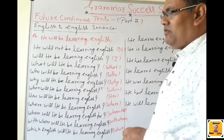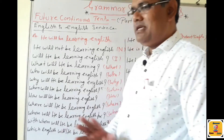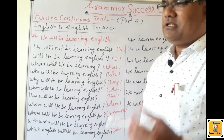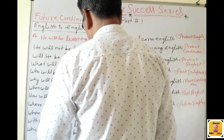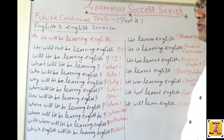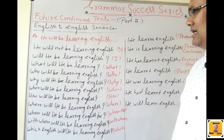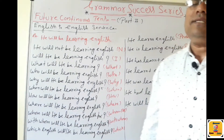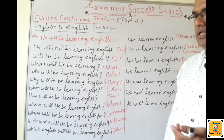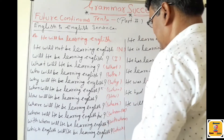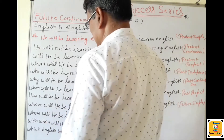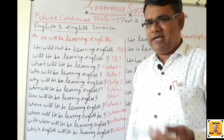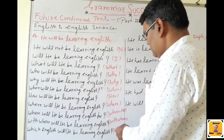Next, 'Where' — so place. 'Where will he be learning English?' Next, use of 'Whom' — means for speaking and to study with someone. With whom: 'With whom will he be learning English?' Means his or her classmates, friends, relatives, family members.